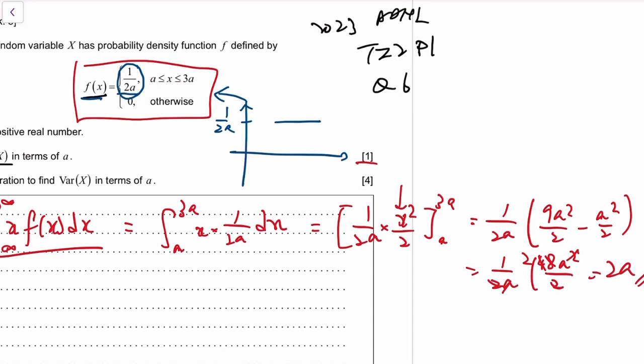And this pdf is defined between a and 3a. And what's the meaning of mean? It's like, on average, what value would you get? Well, since this pdf is just like a rectangle, then by symmetry the mean is 2a. So that's why the mean is 2a.